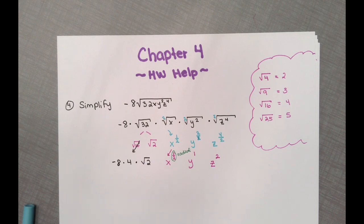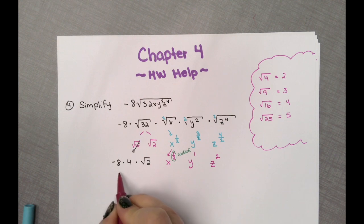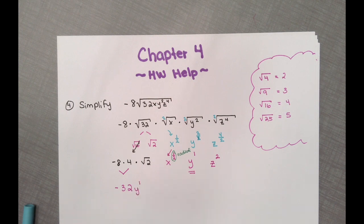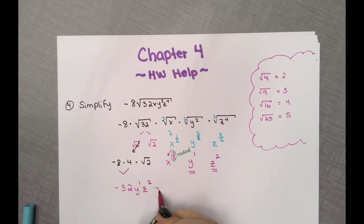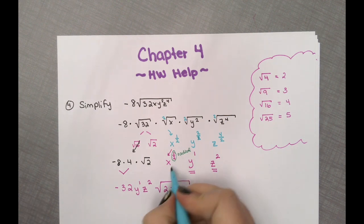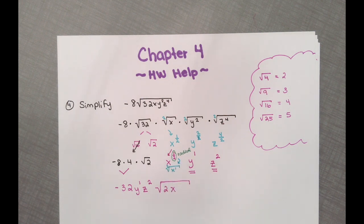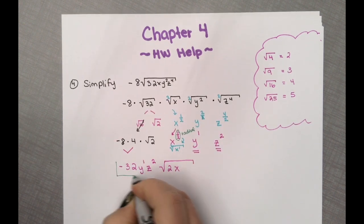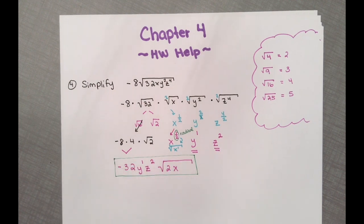So our answer: negative 8 times 4 is negative 32. We also have y to the first power outside the radical. We have z squared outside the radical. Inside the radical we have a 2 and an x — because x has a fractional exponent of one-half. Be careful: sometimes when you simplify your fractions the denominator changes, meaning your index changes. When writing your final answer, the index needs to be the same for everything inside. So this would be your answer for question number 4.